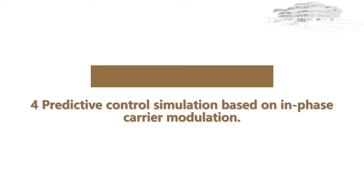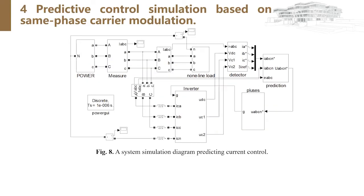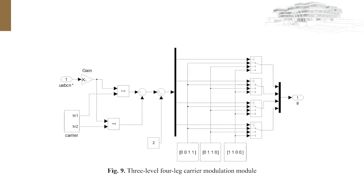In the fourth part, I will show you the predictive control simulation based on in-phase carrier modulation. The simulation model has a three-level four-leg APF using voltage-free sensor PQR harmonic detection, predictive current control, and in-phase carrier modulation. The simulation diagram is shown in Figure 8, and the 3-level 4-leg carrier modulation model is shown in Figure 9.